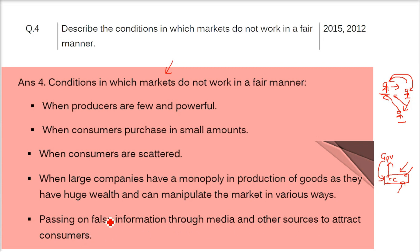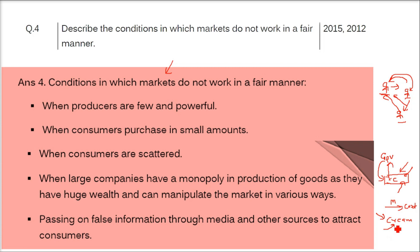Another condition is passing on false information through media and other sources to attract consumers. Marketing people want to sell products at any cost without caring whether the consumer is actually benefited. For example, fairness creams — there is no cream that can actually make you fairer, but companies target people who want to improve their complexion. These companies say 'in seven days you will be fair,' and this simply does not happen. This is how they cheat people through false advertising.